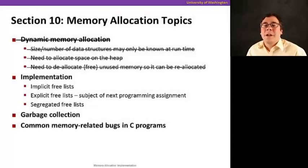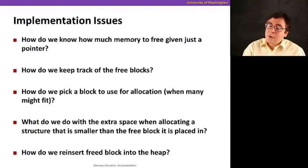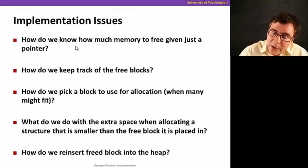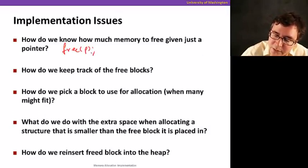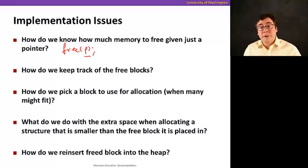Now that we know the basics of dynamic memory allocation, let's see how it is implemented. The main implementation issues or questions are, first, how do we know how much memory to free given just a pointer? Remember that free just takes a pointer as a parameter, so just based on the pointer we need to know how much memory to free. How do we keep track of which blocks in our heap are free? How do we pick a block among the free blocks to be allocated when many of them might be suitable? It could be because we need to reduce fragmentation, we need to be fast enough and so on.